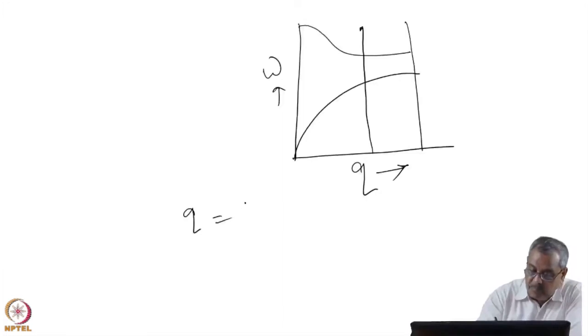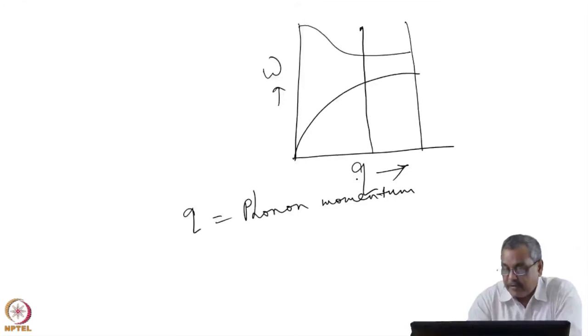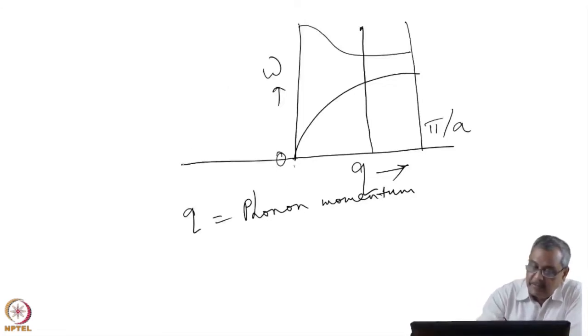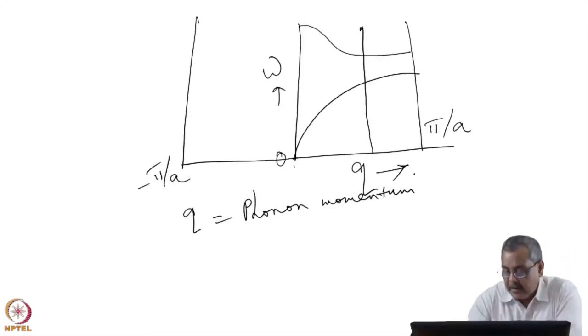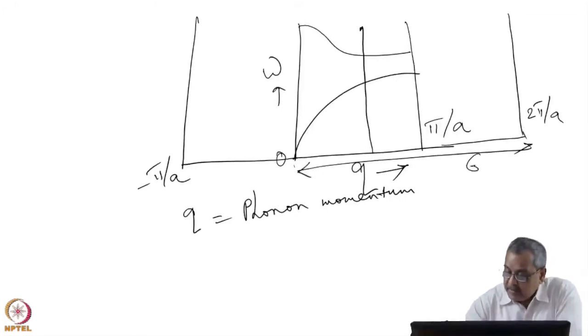I must caution you that I have got three values for momentums. One is q, this is the phonon momentum, phonon wave vector. When I'm plotting ω versus q, this is a phonon wave vector and this is limited between zero to π/a and on the negative side minus π/a for a linear lattice of length L.